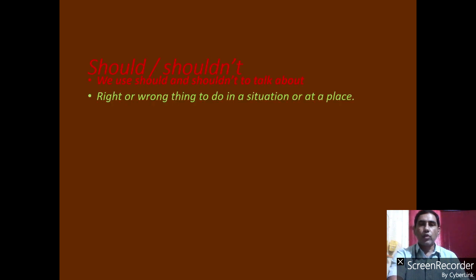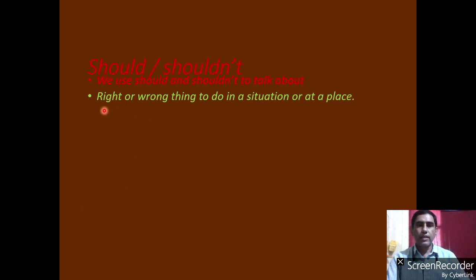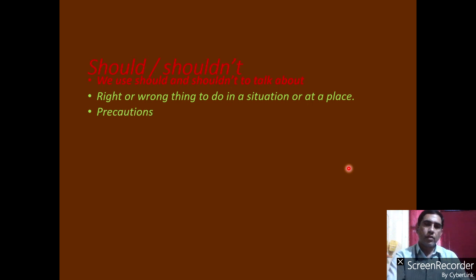We use should and shouldn't to talk about number one: a right or wrong thing to do in a situation or at a place. Some grammarians say the same rule as should is used to express obligation. But here I say right or wrong thing. For taking precautions also we use should.